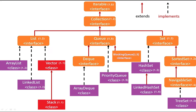Legacy means Java doesn't update those classes with new features — those are old classes. In the collection framework, there are two legacy classes: Vector and Stack. Collection was introduced in Java 1.2. Inside the Collection interface, there are three child interfaces: List, Queue, and Set. Initially, inside Collection there were only two child interfaces — List and Set — and in Java 1.5 one more interface was added: Queue.